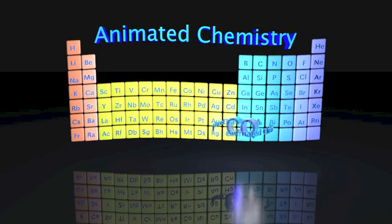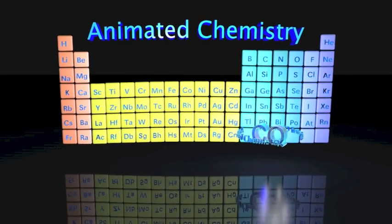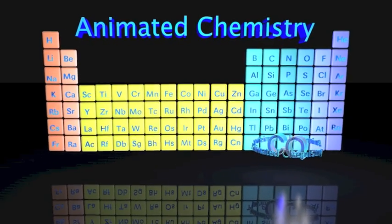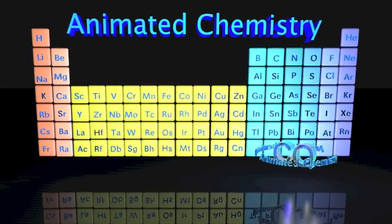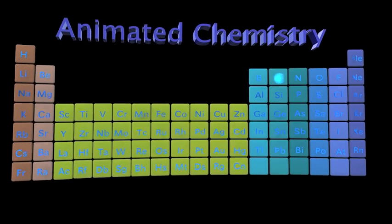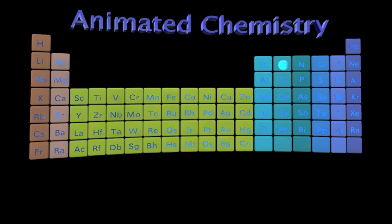Carbon itself is the principal protagonist of the part of chemistry called organic chemistry. Carbon is located in Group 4A of the periodic table of the elements.